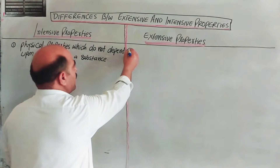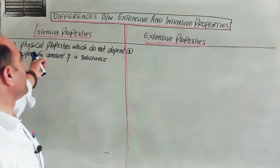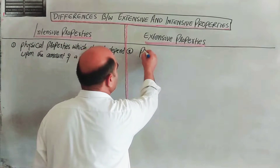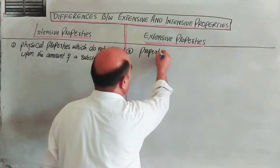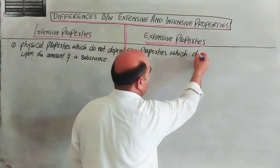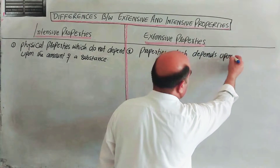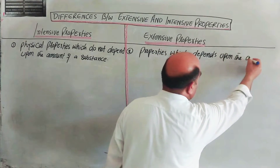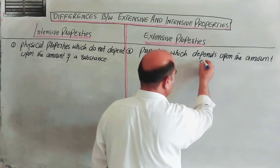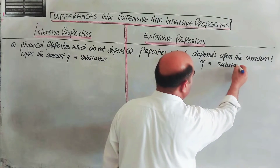Extensive properties are those physical properties which depend upon the amount of substance. So the first difference is: intensive properties do not depend upon the amount of substance, while extensive properties depend upon the amount of substance.